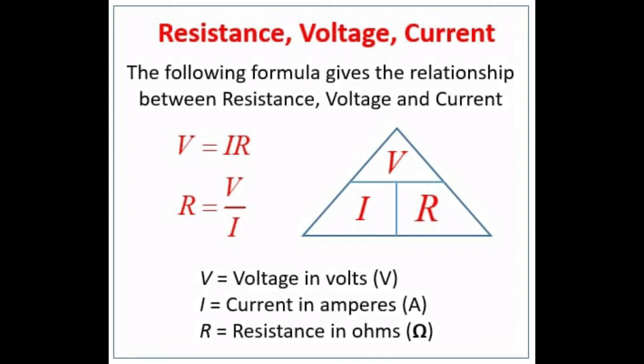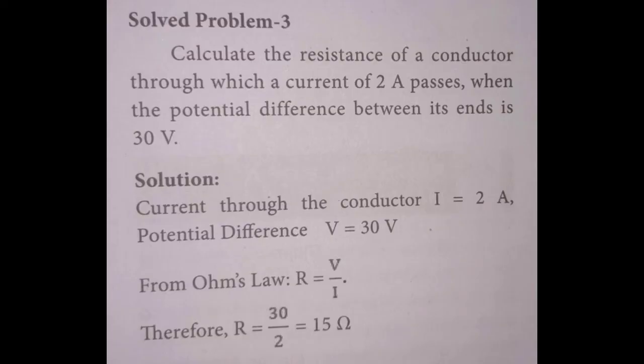Unit of resistance. The SI unit of resistance is ohm, represented by the symbol Ω. Resistance of a conductor is said to be 1 ohm if a current of 1 ampere flows through it when a potential difference of 1 volt is maintained across its ends. Hence, 1 ohm = 1 volt per 1 ampere. Now we will see the solved problem. Calculate the resistance of a conductor through which a current of 2 ampere passes when the potential difference between its ends is 30 volts. Current I = 2 A, potential difference V = 30 volt. From Ohm's Law, R = V/I. Therefore, R = 30/2 = 15 ohm.